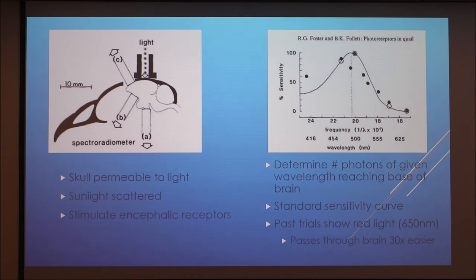Because of their location, the deep brain photoreceptors can also be called encephalic receptors. In an experiment by Foster and Follett, a fiber optic was used to shine light on the skull and a spectroradiometer was used to measure the absorption at different wavelengths. With their data, they determined a percent sensitivity that is essentially the number of photons of a given wavelength that reach the base of the brain, which is where the photoreceptors are.